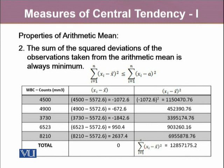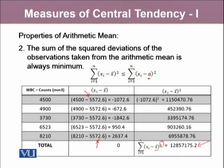Moreover, the sum of the squared deviations of the observations taken from the arithmetic mean is always going to be minimum. If we take any other value which is not arithmetic mean and take the deviations from each observation, this sum is definitely going to be higher. If we see that sum of the deviations of observation and if we squared them up, the value is going to be 12,857,175.2. But if instead of x̄ which is 5,572.6 here, if we use any other value, let's say 5,578, this value is definitely going to be smaller than when we use 5,578 here in the deviations. Hence, the square deviations are always going to be minimum if they are taken from arithmetic mean.